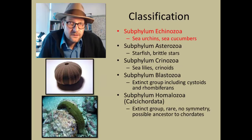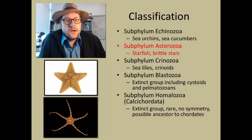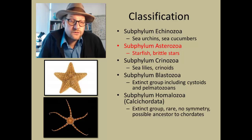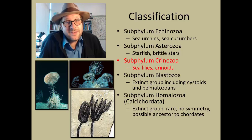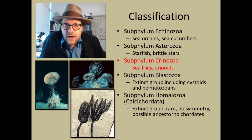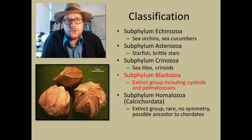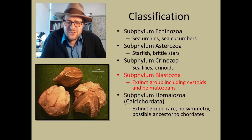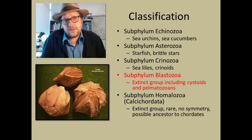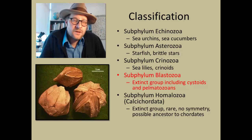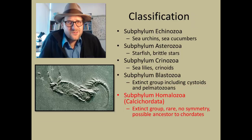The first subphylum is the Echinozoa, which includes sea urchins and sea cucumbers. The second subphylum is the Asterozoa, which are the starfish and brittle stars. The third subphylum is the Crinozoa — the sea lilies and crinoids, a very common group in the fossil record. The fourth group is the subphylum Blastozoa, which includes cystoids and rhombiferans; the Blastozoa all went extinct at the end of the Permian and is the first subphylum that is totally extinct.